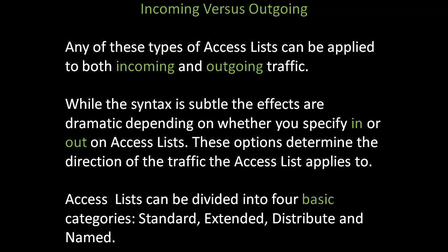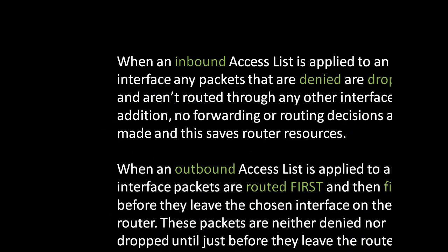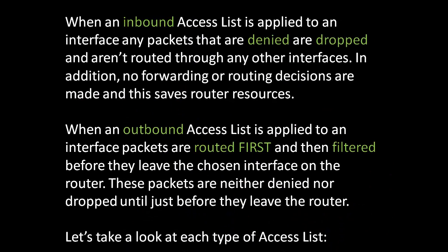Access lists can be divided into four basic categories: standard, extended, distribute, and named. When an inbound access list is applied to an interface, any packets that are denied are dropped and aren't routed through any other interfaces. In addition, no forwarding or routing decisions are made, and this saves router resources. When an outbound access list is applied to an interface, packets are routed first and then filtered before they leave the chosen interface on the router. These packets are neither denied nor dropped until just before they leave the router. Let's take a look at each type of access list.